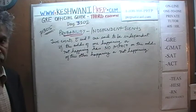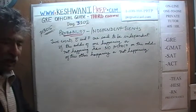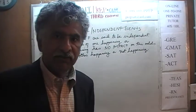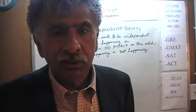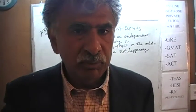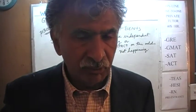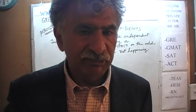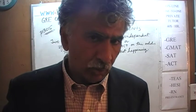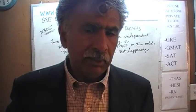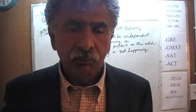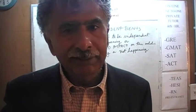Today is our lesson number 102, Day 3102. The three is to signify that we are in the third edition. We are discussing the topic of probability, something that we started yesterday. Yesterday we talked about what it means for two events to be mutually exclusive. Today we will talk about independence.